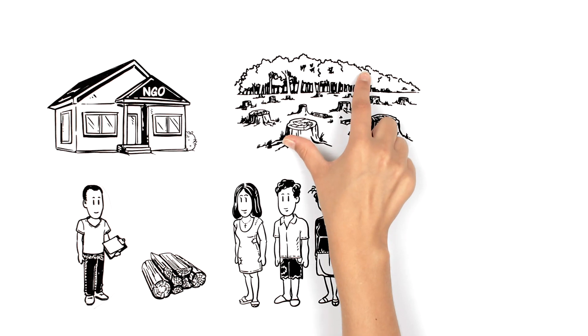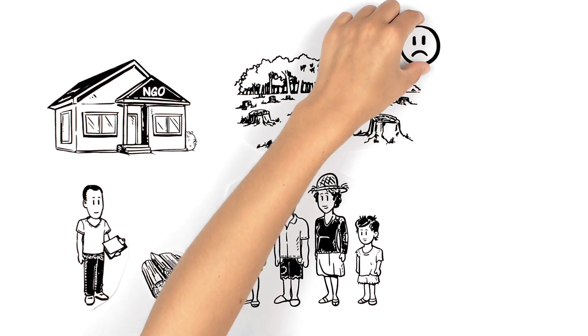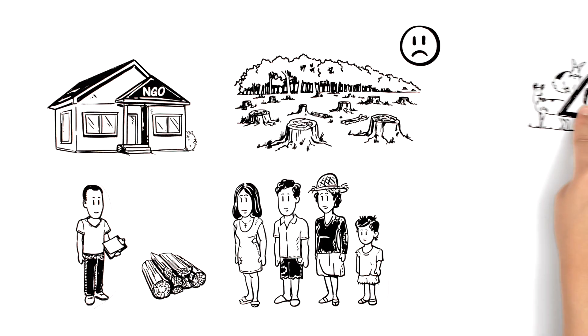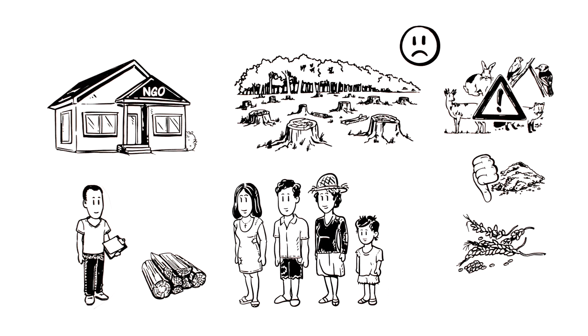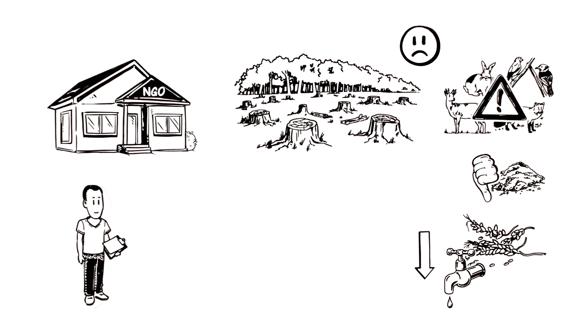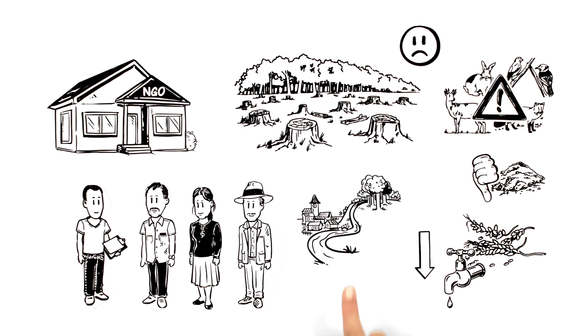This is causing deforestation and the landscape is being damaged. Also, wildlife is endangered, the quality of the soil is diminishing, and crop production and water supply are being reduced, affecting the life of people in a downstream village.